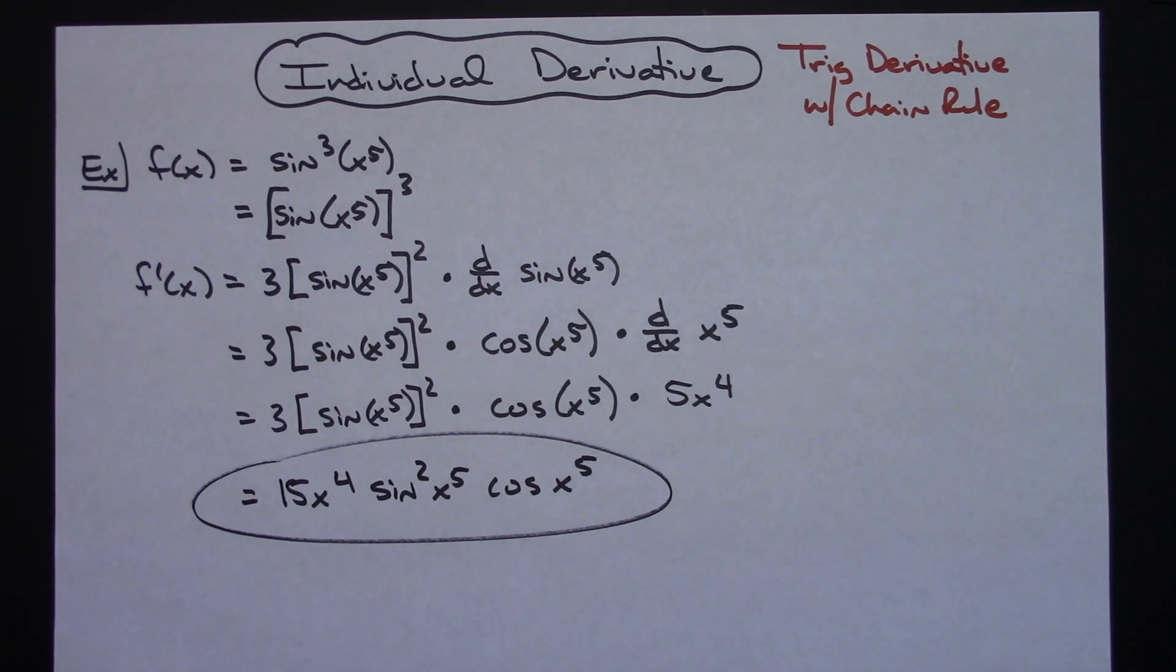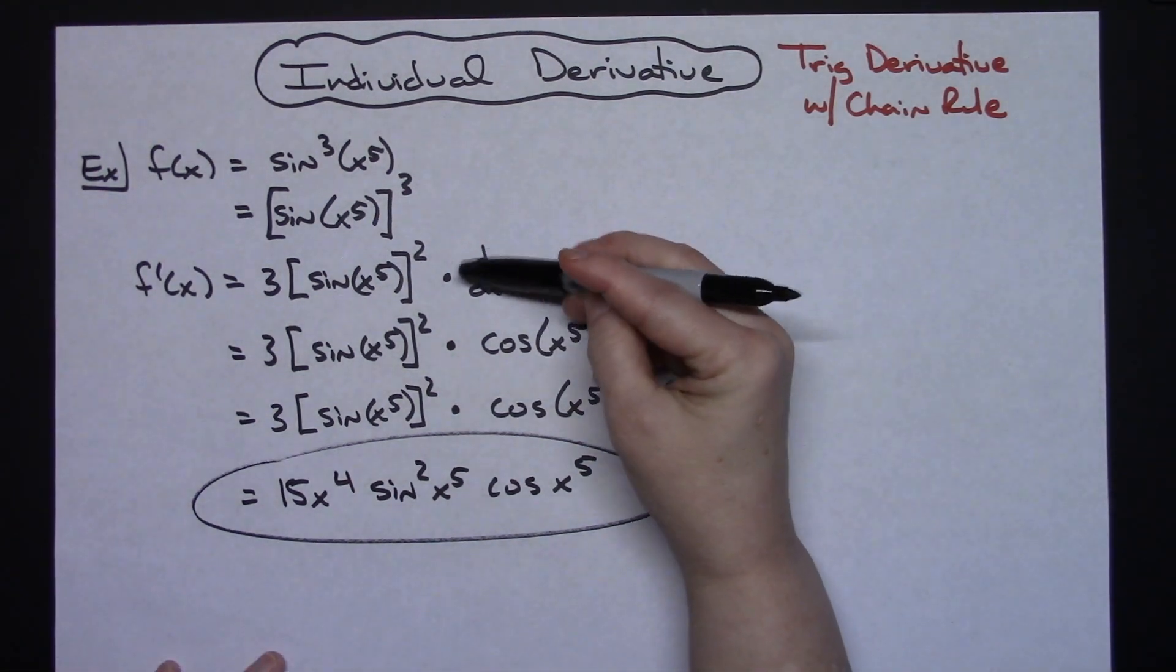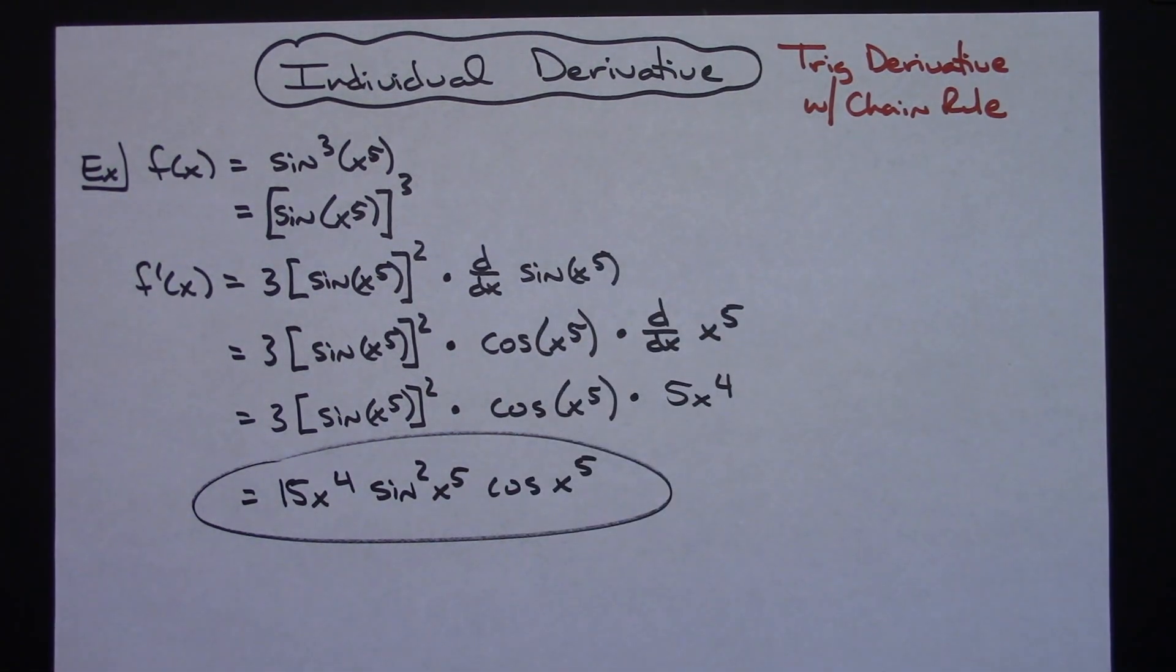Pretty much a straightforward trig derivative with two chain rules in there. I really highly recommend that you use that d dx notation because you are less likely to drop one of your chains if you do that. If you take it one step at a time so you can clearly see where those chains are going to occur.